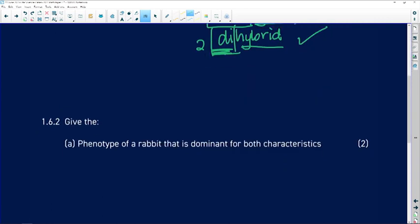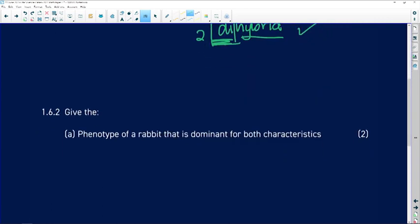Give the phenotype of a rabbit that is dominant for both characteristics. So our dominant phenotype is brown fur with long ears.